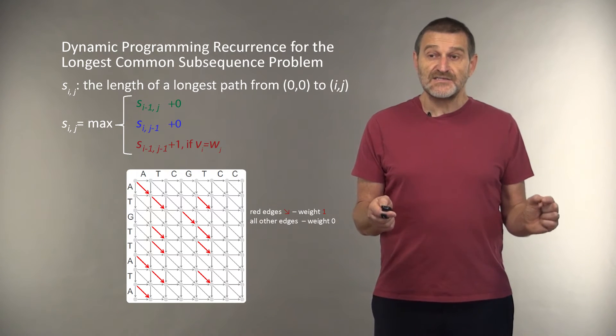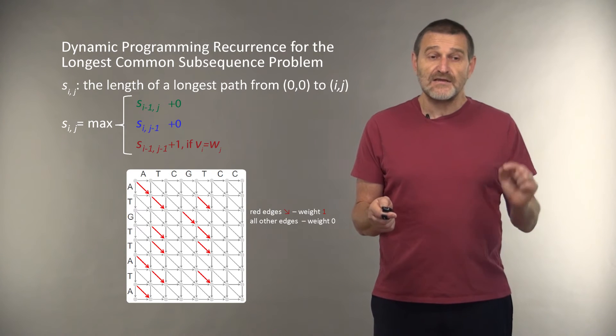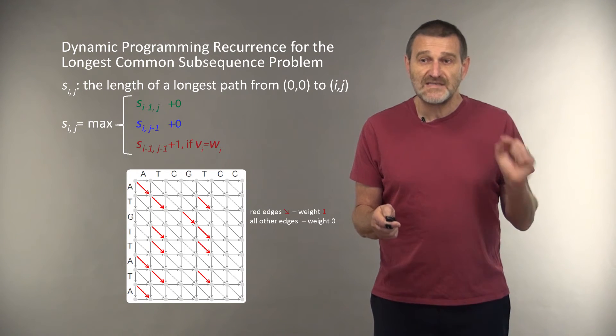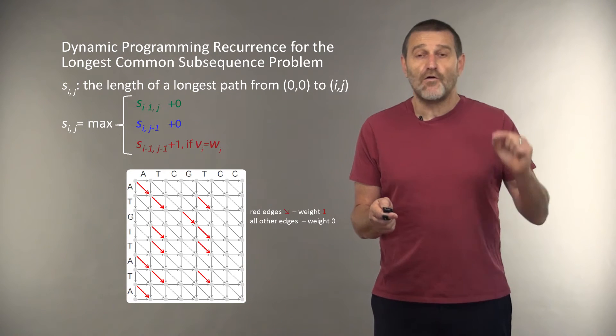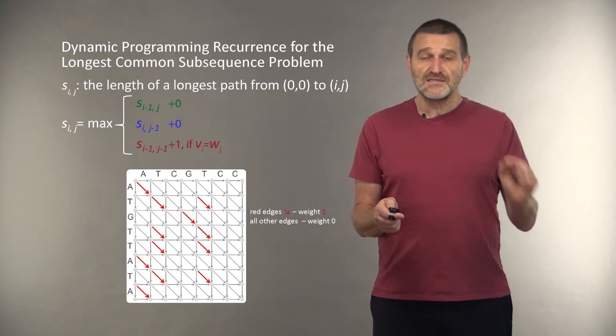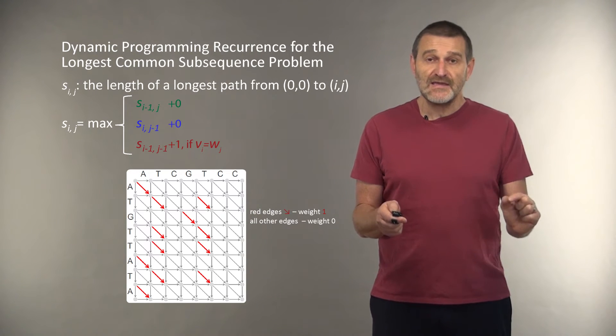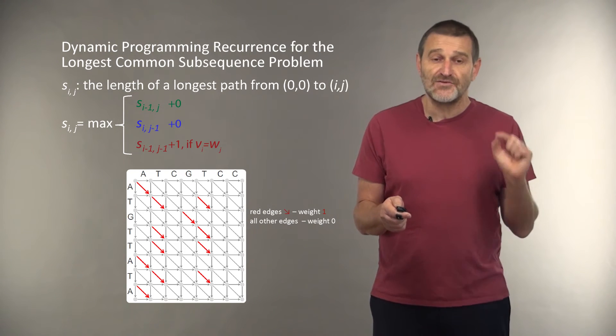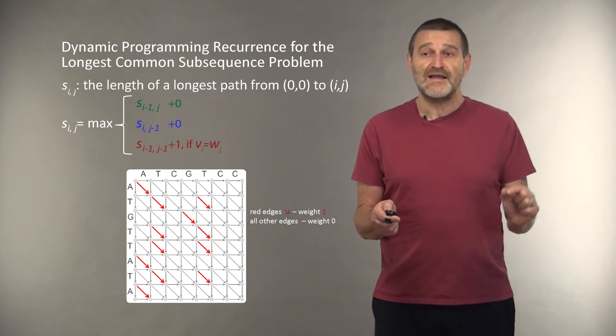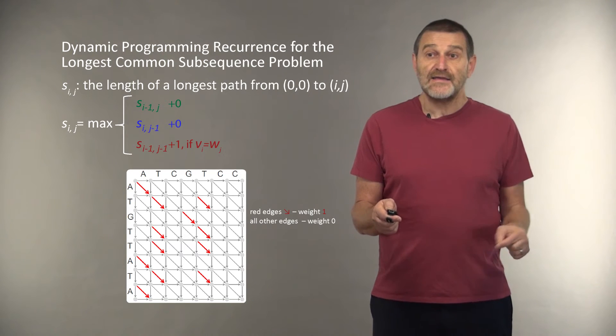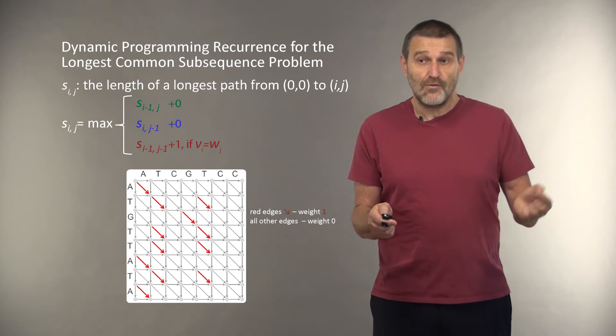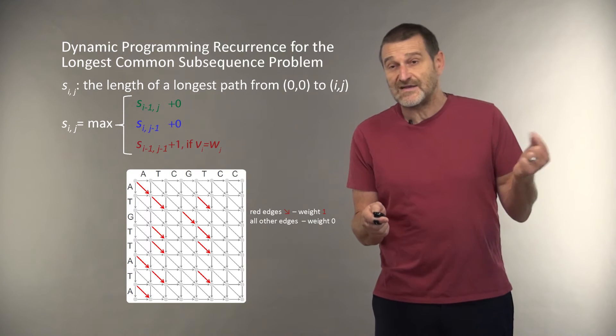And as a result, our recurrence for the longest common subsequence problem becomes particularly simple because the weight of all edges in the longest subsequence problem is zero, except for the red edges that correspond to matching letters. Therefore, the recurrence is simply S_(i-1,j) plus zero, or S_(i,j-1) plus zero.